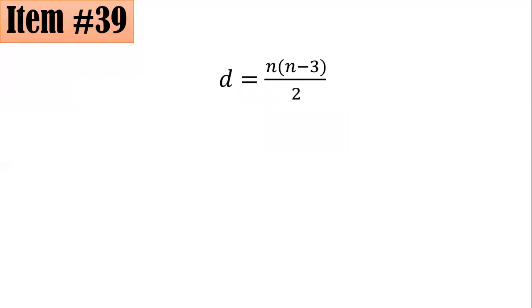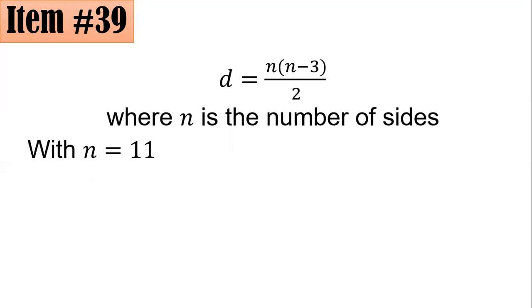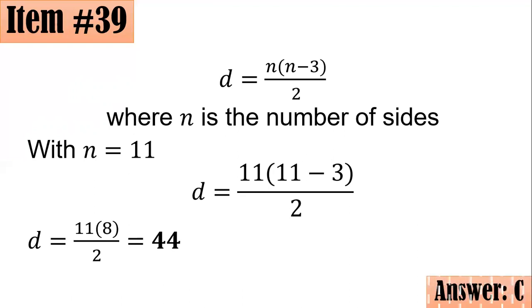Since an undecagon has 11 sides, so n is 11 here. By substitution, d equals 11 times 11 minus 3 all over 2. That becomes 11 times 8 all over 2. 11 times 8 is 88 divided by 2 will give you 44. So I'm sure that an undecagon will have 44 diagonals, letter C.